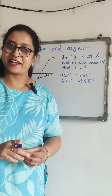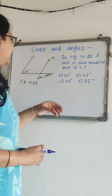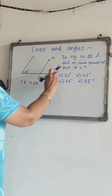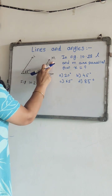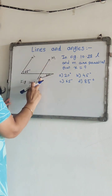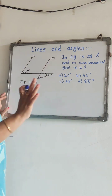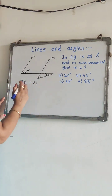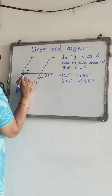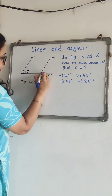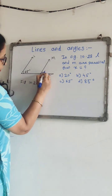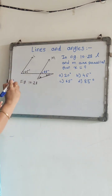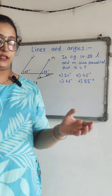In figure 10.28, L and M are parallel. Find X. Four options are given. This angle is 65°, so this angle is also 65° because corresponding angles are equal.